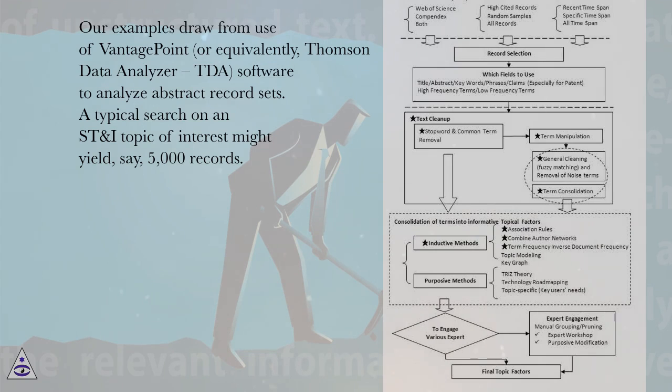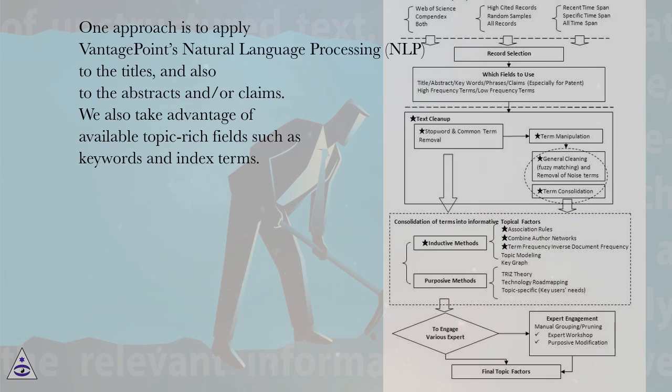A typical search on an ST&I topic of interest might yield, say, 5,000 records. One approach is to apply Vantage Point's Natural Language Processing (NLP) to the titles and also to the abstracts and/or claims.